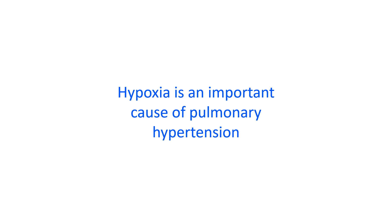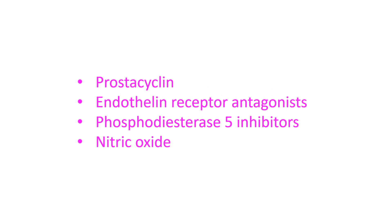Home oxygen therapy with either a conventional oxygen cylinder or an oxygen concentrator which derives oxygen from room air has been in use for reducing pulmonary arterial hypertension. Other alternatives for controlling pulmonary hypertension are prostacyclin, endothelin receptor antagonists, phosphodiesterase 5 inhibitors, and nitric oxide.